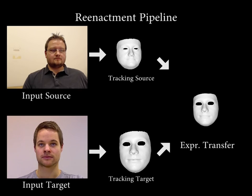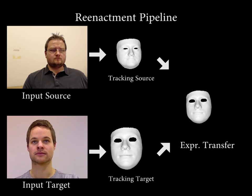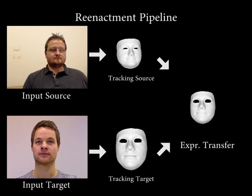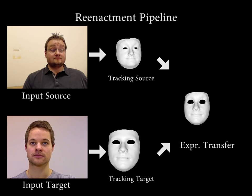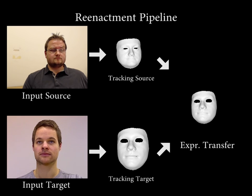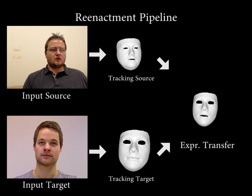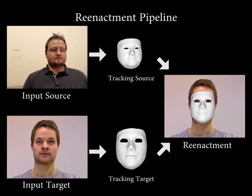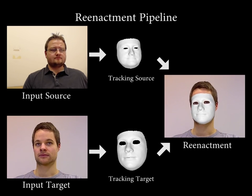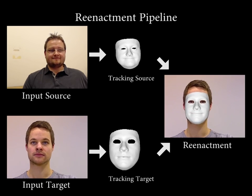Our system reconstructs and tracks both source and target actors using a dense photometric energy minimization. Using a novel subspace deformation transfer technique, we transfer the expressions from the source to the target actor. This allows us to obtain a modified face template of the target actor according to the expressions of the source actor. We then re-render the modified face on top of the target sequence in order to replace the original facial expressions.